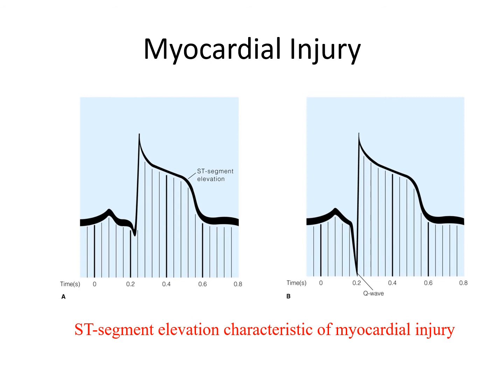We see the fireman's hat again, confirming acute myocardial infarction injury is occurring as we witness this EKG tracing. EKG changes characteristic of myocardial infarction include the ST segment elevation and the clinically significant development of a Q wave, which is characteristic of a transmural infarction—indicating an ST elevation MI.